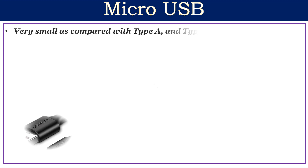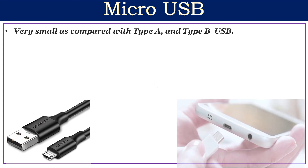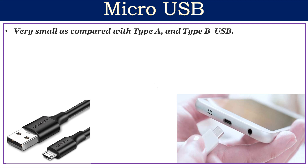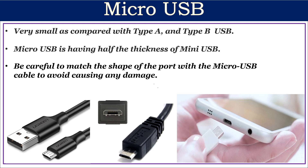Micro USB connectors are very small compared to Type A and Type B USB. These ports are found in many cell phones, tablets, and other portable devices. Micro USB has half the thickness of Mini USB. Like Type A cables, Micro USB will only go into the port one way, so be careful to match the shape of the port with the Micro USB cable to avoid causing any damage.